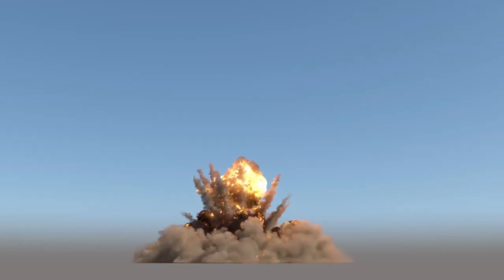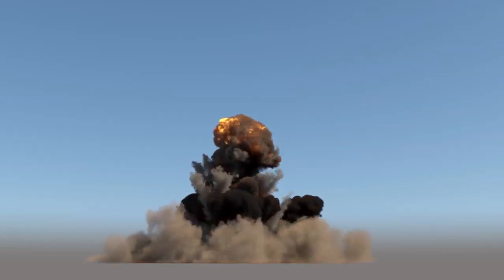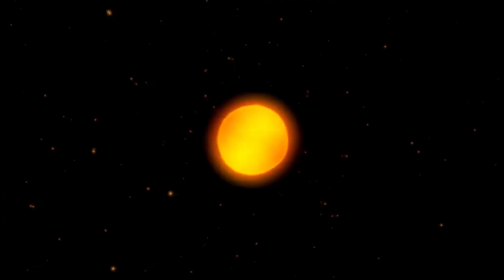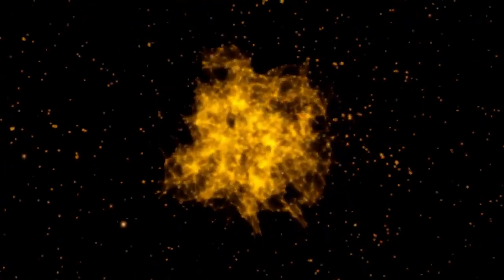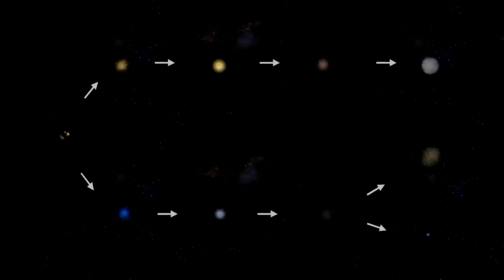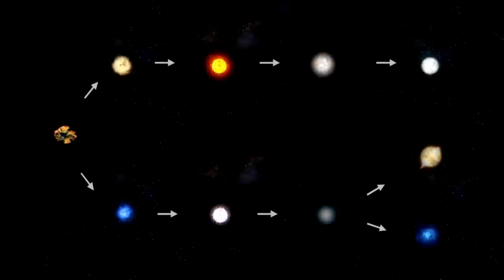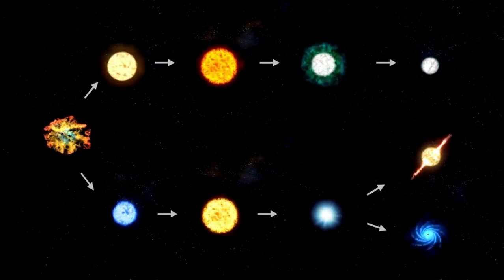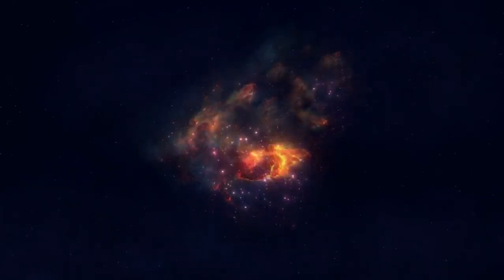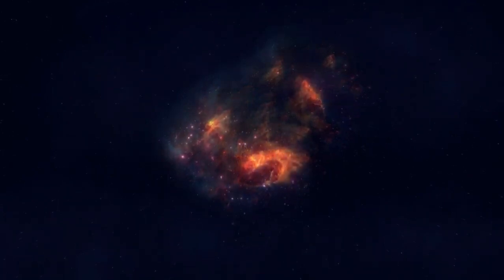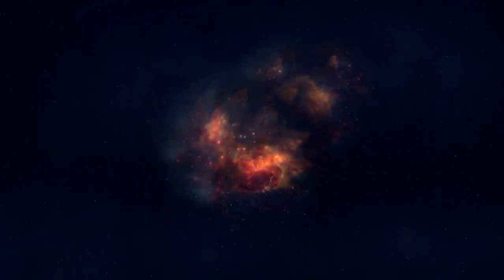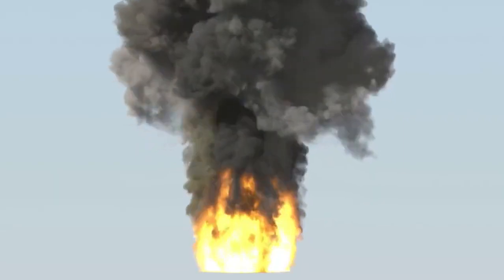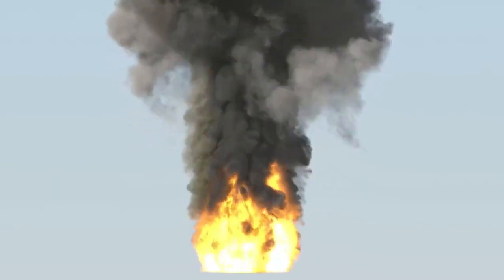Stars like Betelgeuse are like giant factories where elements heavier than helium get created. Astronomers call these heavier elements metals, and how they form in red giants is a really important process. It's a big deal because this process shapes how everything in the universe is made up chemically. Understanding how star spots affect temperature changes and block radiation helps astronomers get what's going on inside red giants. When Betelgeuse got dimmer and cooler, it made astronomers share lots of ideas and theories.